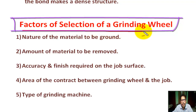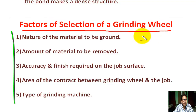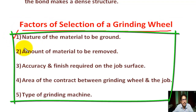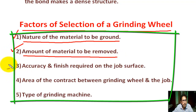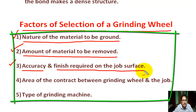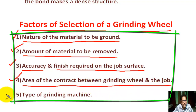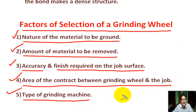What are the factors of selection of a grinding wheel? Number one, nature of the material to be ground. Number two, amount of material to be removed. Number three, accuracy and finish required on the job surface. Number four, area of contact between the grinding wheel and the job. Number five, type of grinding machine.